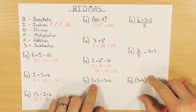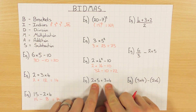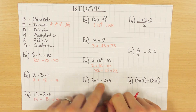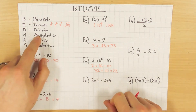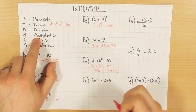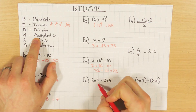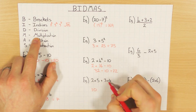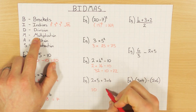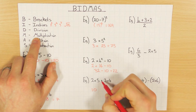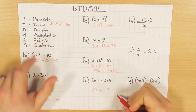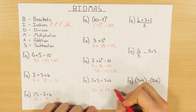This one has two multiplications and an addition. Multiplication comes before addition, so I do both multiplications first: 2 times 5 is 10, 3 times 4 is 12, then bring the addition down and finish off to get 22.